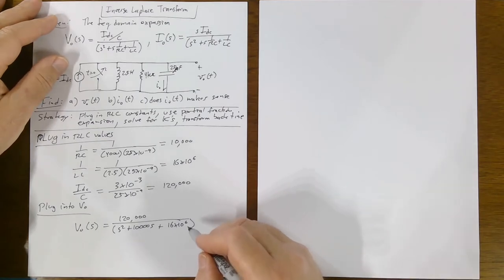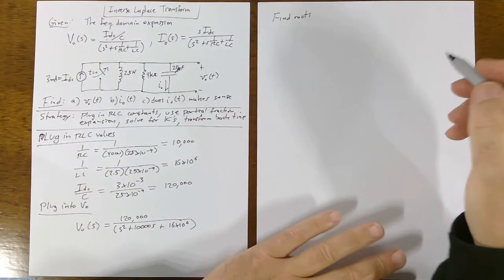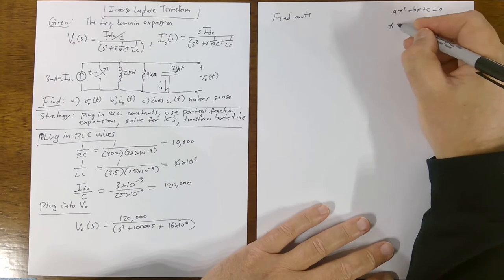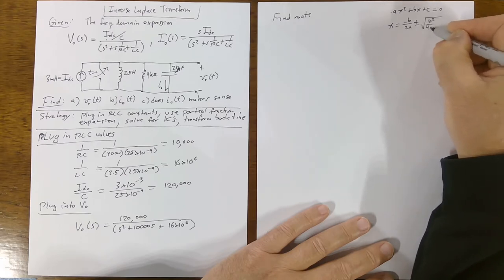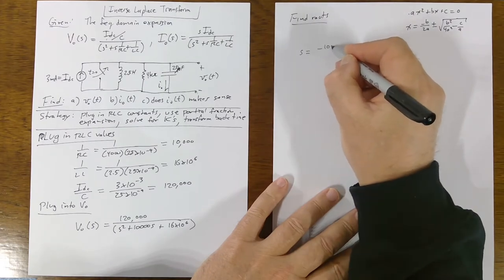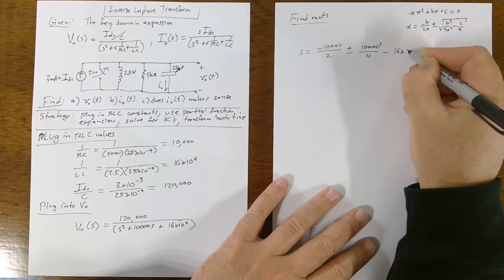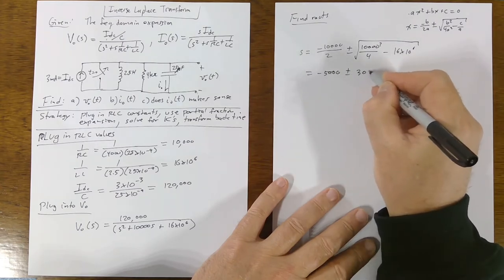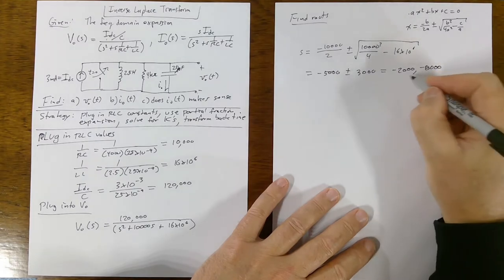To find the roots, we use the quadratic formula: ax² + bx + c = 0, giving x = −b/(2a) ± √(b²/(4a²) − c/a). Applying this: S = −10,000/2 ± √(10,000²/4 − 16×10⁶), which is −5,000 ± 3,000. So the roots are S = −2,000 and S = −8,000. These are real and distinct roots.